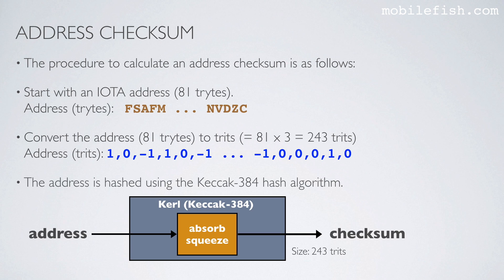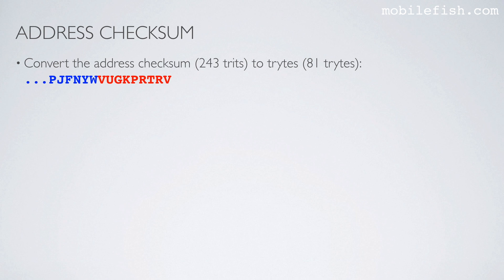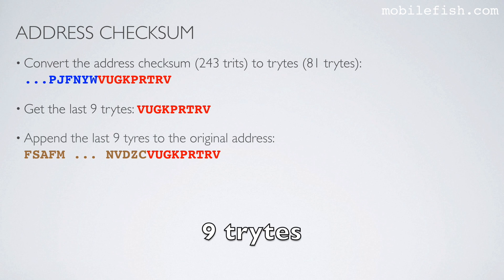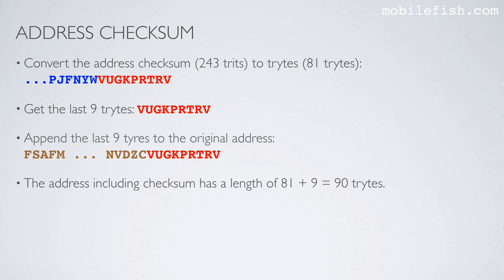Next, the address is hashed using the Keccak-384 hash algorithm. The address is absorbed and squeezed, and a checksum is generated with a size of 243 trites. Convert the address checksum, which is 243 trites long, to trytes, which is 81 trites long. Get the last 9 trites and append them to the original address. The address including checksum then has a length of 81 plus 9, equaling 90 trites.